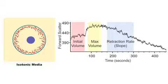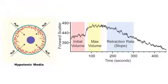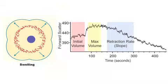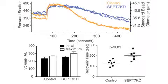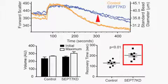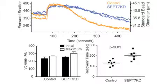To answer this question, Gilden et al. used an osmotic swelling assay. Cells are put into a hypotonic media which causes them to swell — essentially forming one big bleb where the cell membrane swells outward away from the cortex. Using flow cytometry, you can ask how big the cell gets and how long it takes to recapture that membrane. Cells lacking septins swell to the same extent as control cells, but they took longer to return to their normal size.